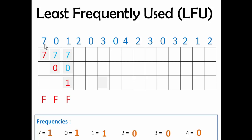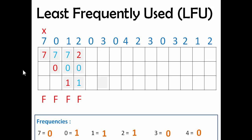Now the page frame buffer is full and the next page is 2, which is not present, so we have to decide which page to remove. We check the frequencies of 7, 0, and 1 — all frequencies are equal, so we apply FIFO. Looking from left to right, 7 came first, so 7 will get removed and 2 will get added. There will be a page fault. 2's frequency will increase, 7's frequency will reset to 0, and we put a cross over 7 to mark it as removed.